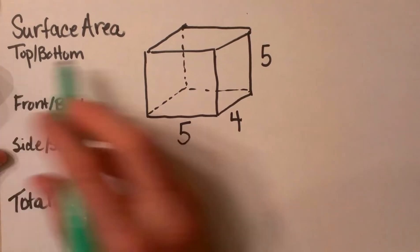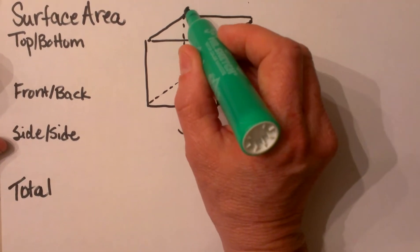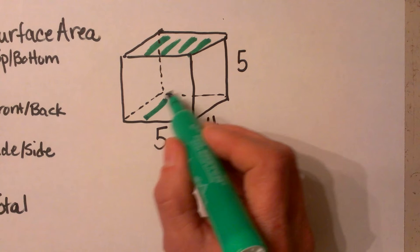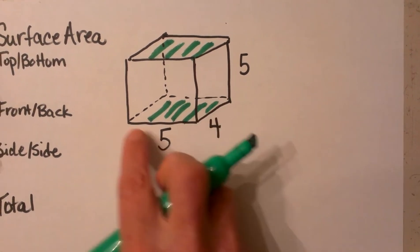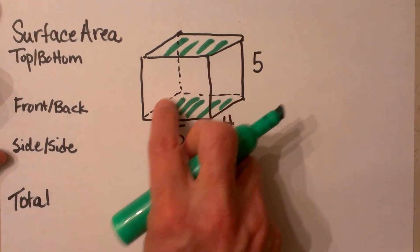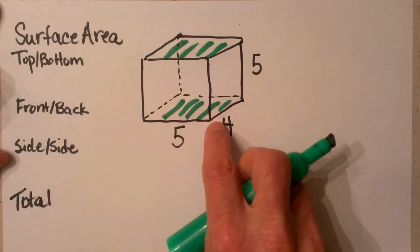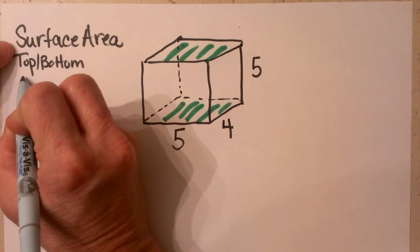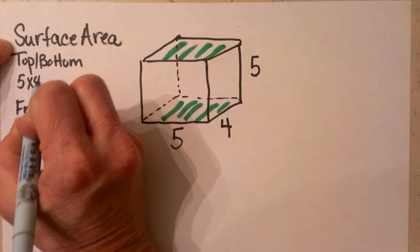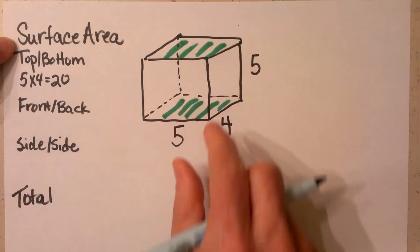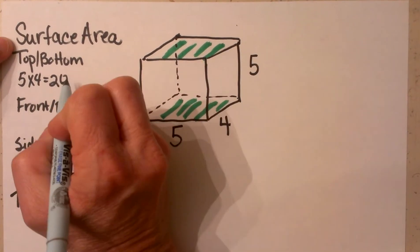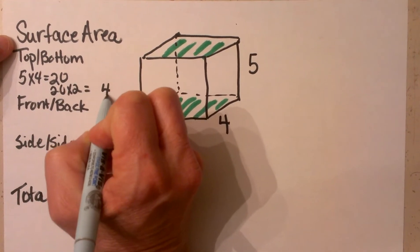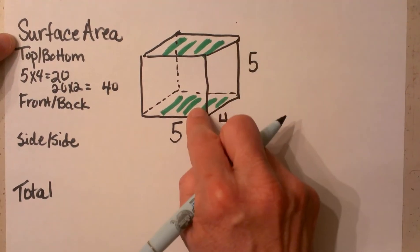We are going to break it down and first find the surface area of just the top and the bottom. That is a rectangle that measures 5 by 4, so the area of the top and the bottom is 5 times 4, or 20. Since I have both the top and the bottom, I am going to double it to 40. So the area of the top and bottom is 40.